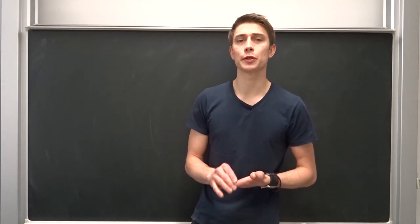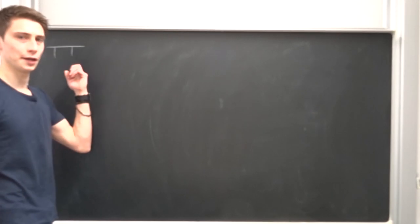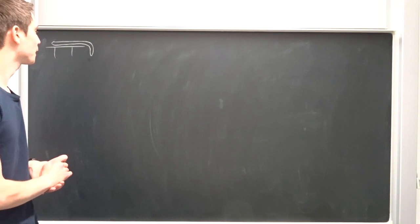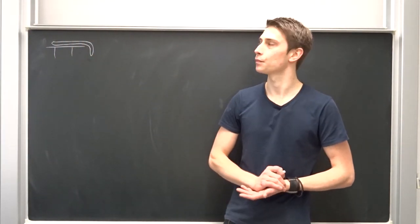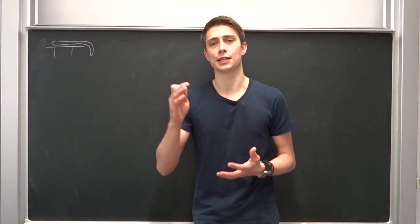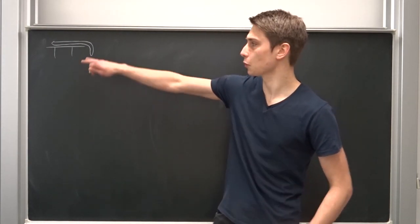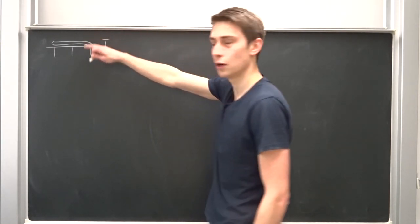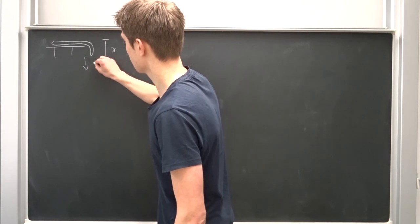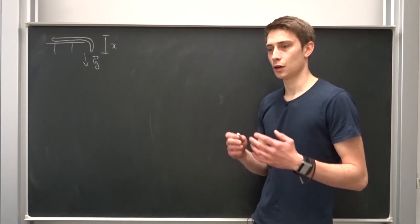We are going to start this new series with a rope sliding down a table. Imagine this is a table — an ugly-looking one — and there's a rope up here, or a snake, whatever you wish. We are going to assume there is no friction involved. The only force acting on the rope is the gravitational force pulling it down. Let's say here's a small part of the rope hanging down — we are going to call this distance x.